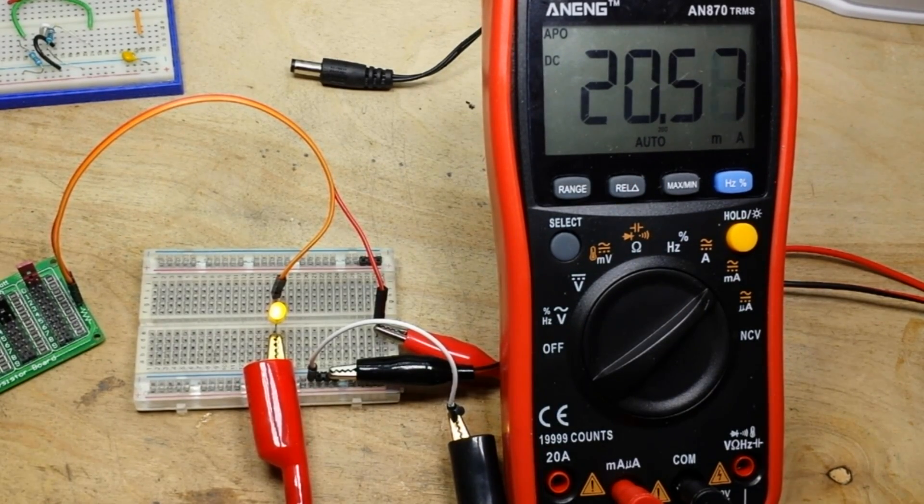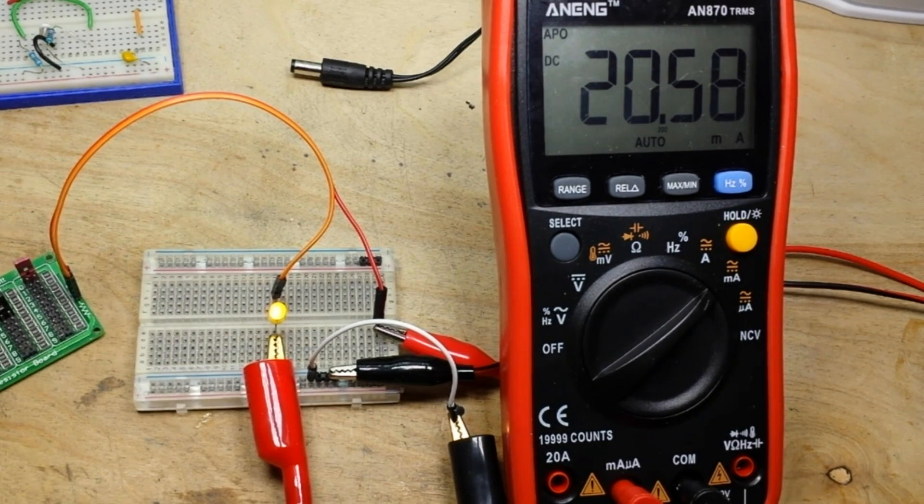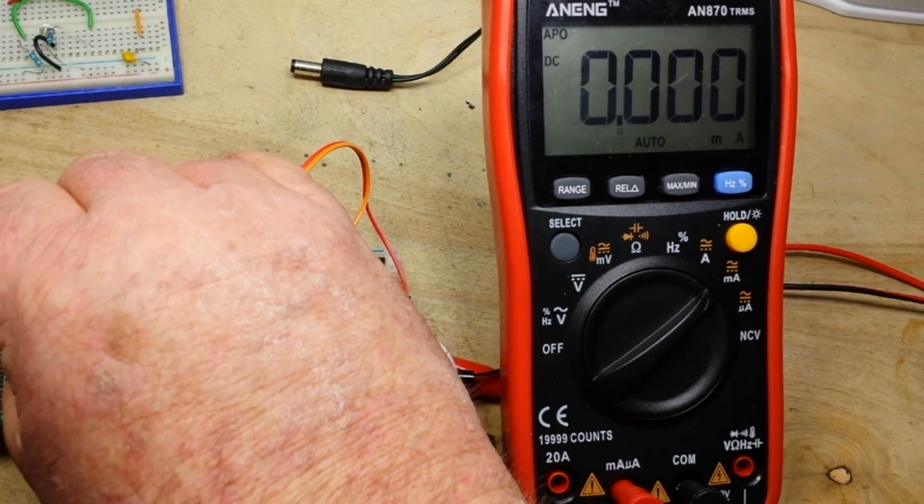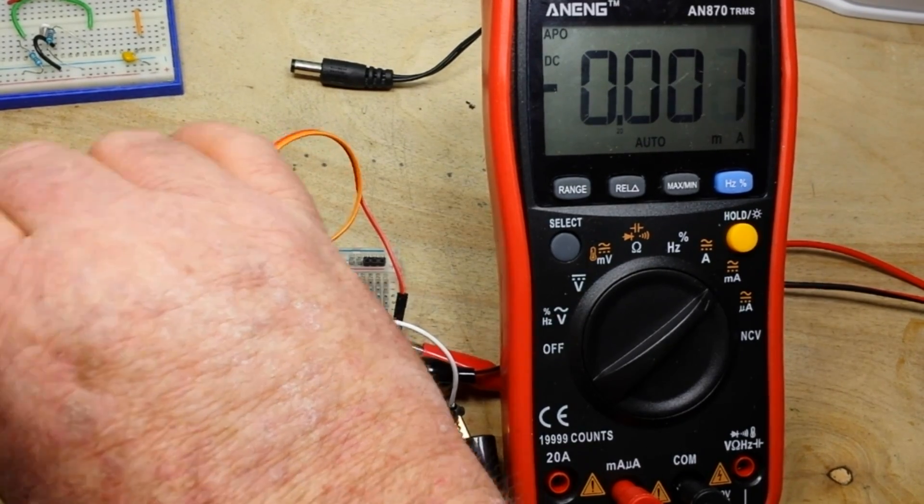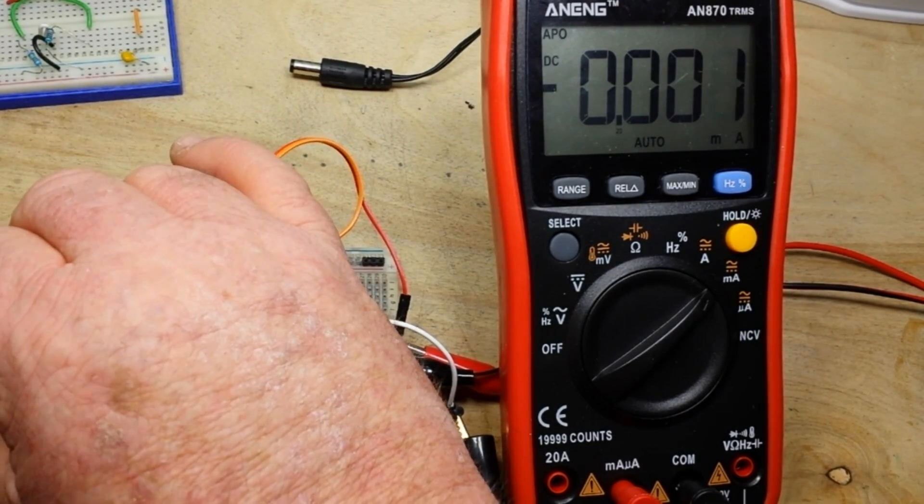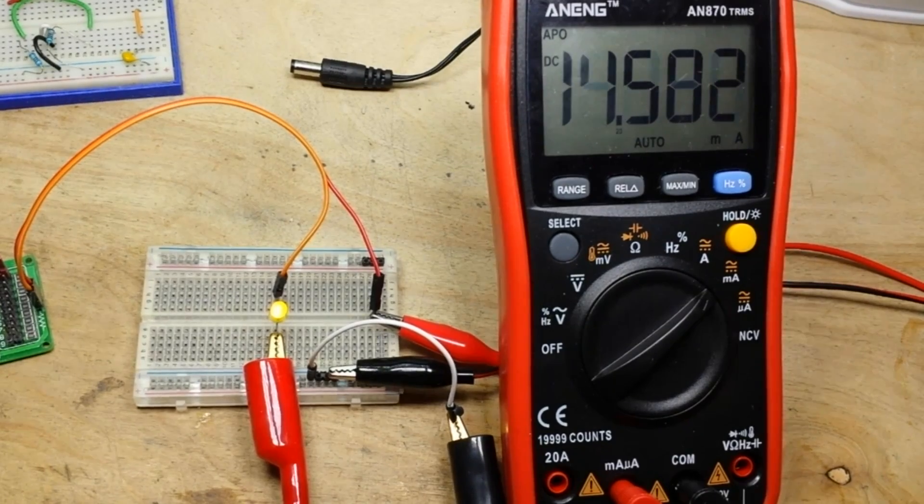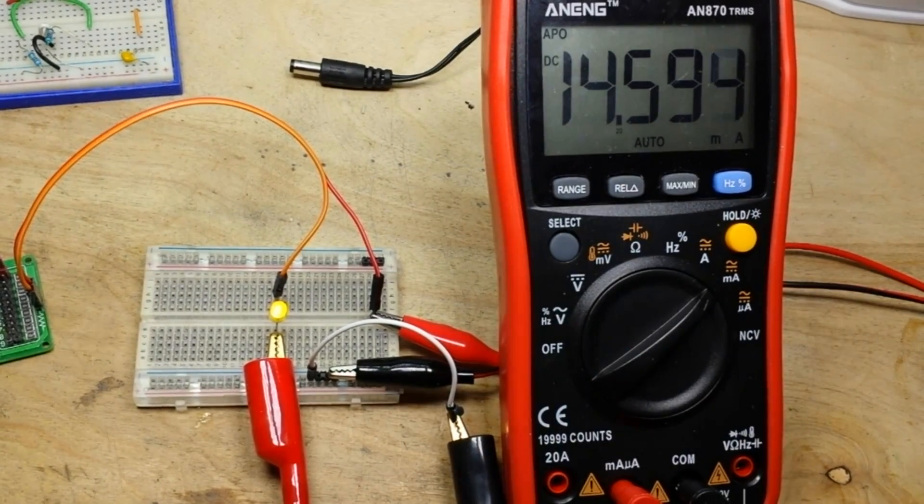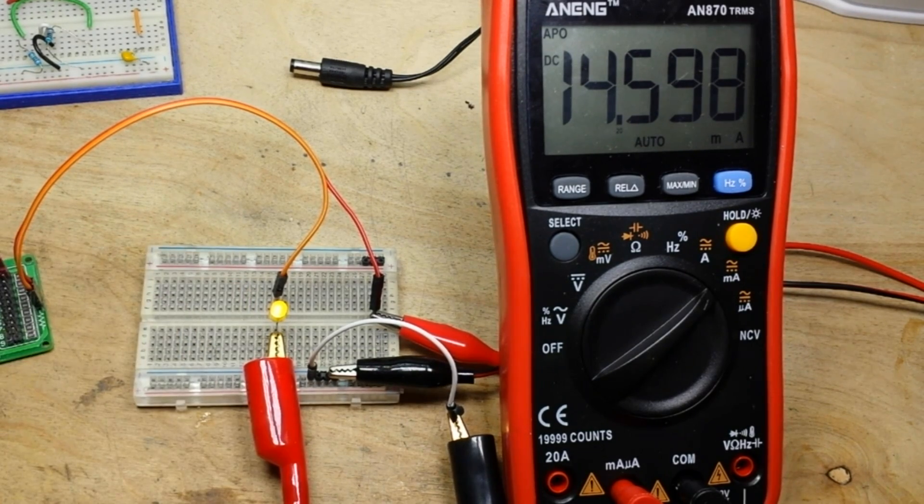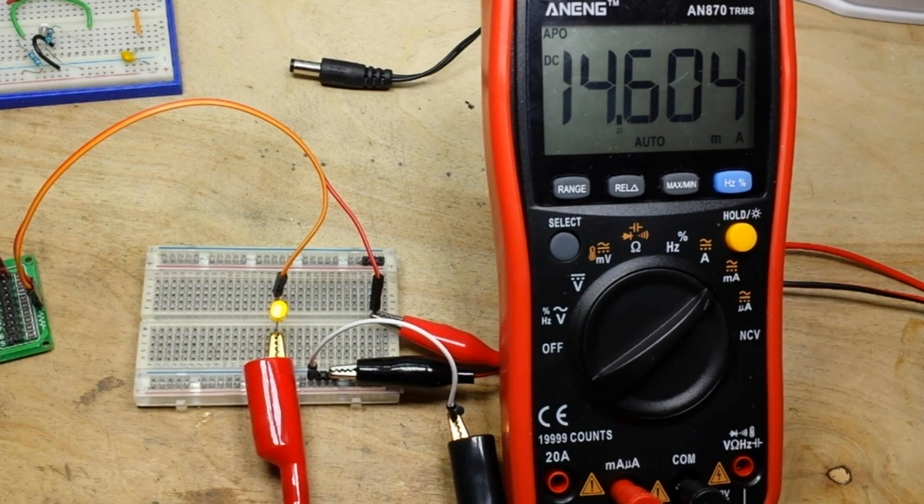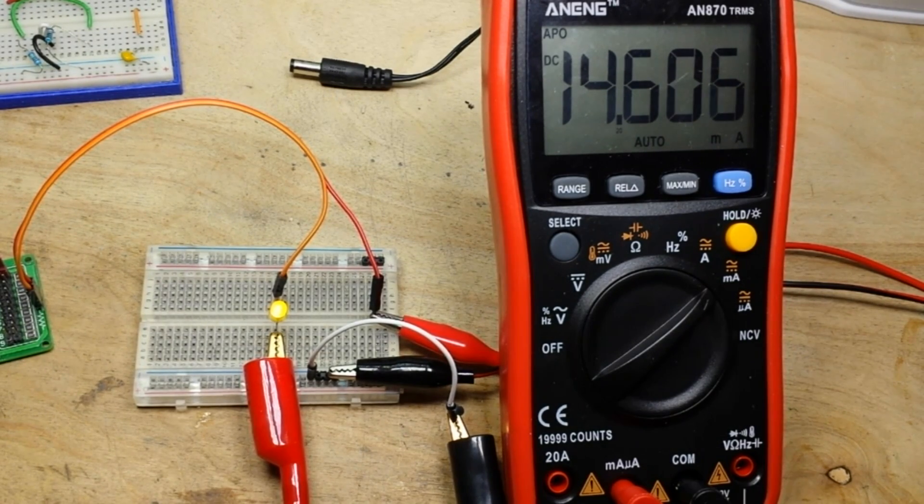Now, here's the point that I want to make. We're at 330 ohms here. And you saw how bright that was. Let's go back to 470, which is a standard resistor value. Now, we're at 14.59 milliamps. And that LED is basically, the human eye can't tell the difference between that. And at 15 milliamps compared to 20 milliamps or 30 milliamps, your LEDs are going to last a lot longer.